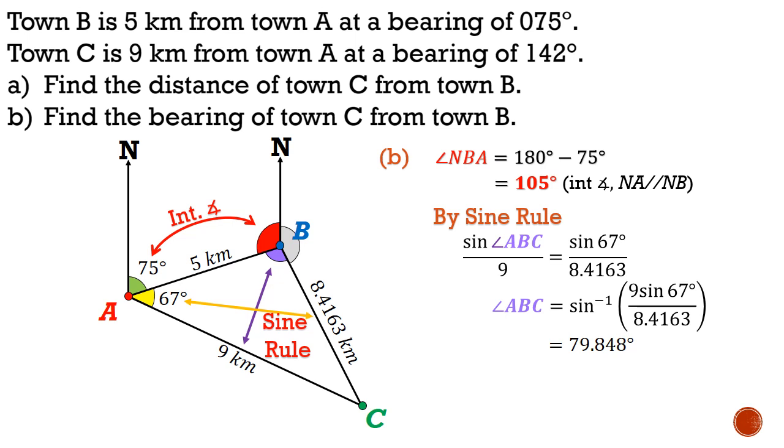Next, we perform the sine rule. Sine ABC over 9 is equal to sine 67 over 8.41. This will tell us that angle ABC is equal to 79.8 degrees. So the grey angle that we want to find is equal to 360 degrees minus the two angles that we just found, and that will be 175.2 degrees.